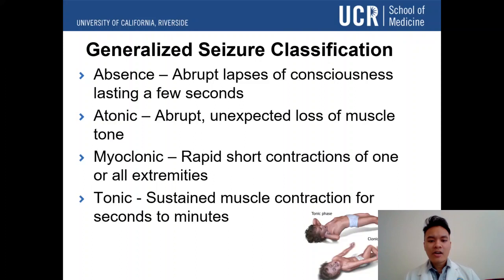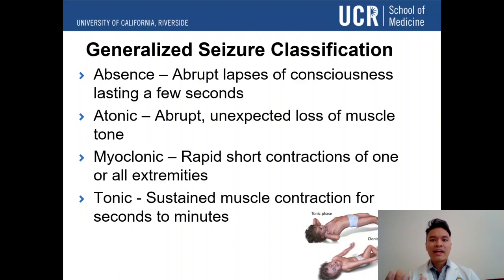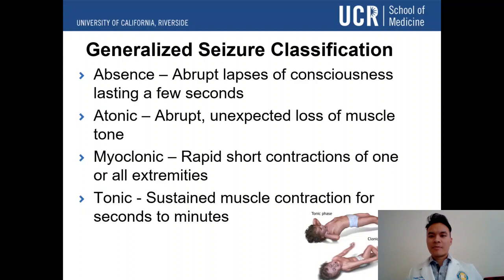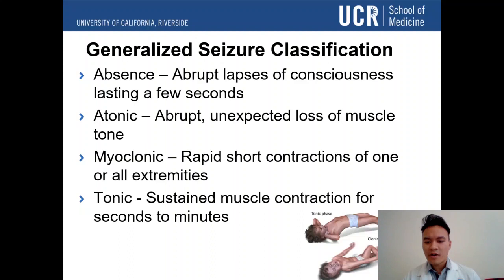Myoclonic and tonic are almost the opposite of atonic. Myoclonic seizures involve rapid, short contractions of one or all extremities — the muscle contracts and relaxes repeatedly. Tonic seizures involve sustained muscle contraction, so the body stays really stiff without relaxing. You can see an example here: with tonic, the child's back is tense and stretched out, whereas with clonic, the body alternates between flexion and relaxation repeatedly.